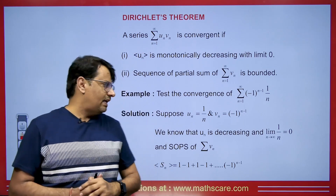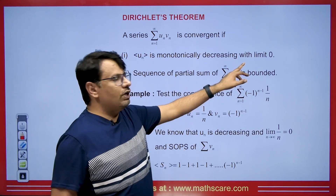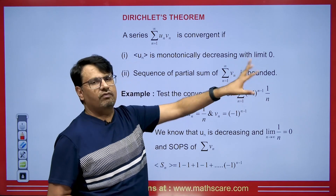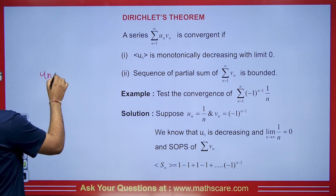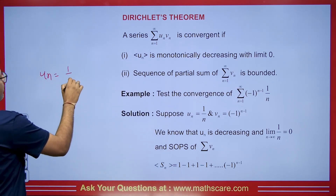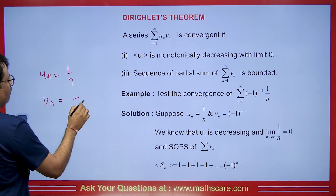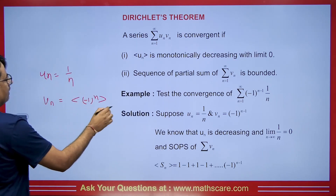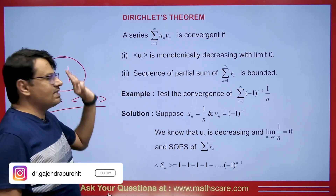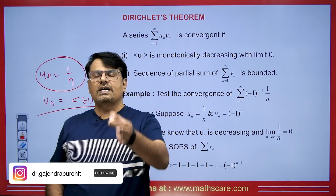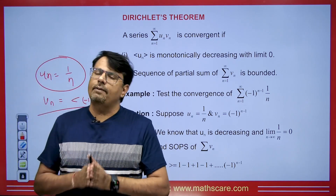Let's take an example. Summation n equals 1 to infinity of (−1)^(n−1) multiplied by 1/n. We will take un as 1/n and vn as (−1)^n. We know that the first sequence, 1/n, is monotonically decreasing, and it is approaching 0 as n tends to infinity.